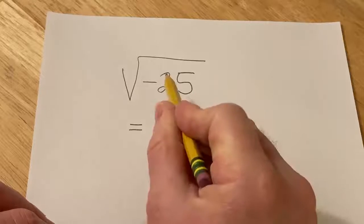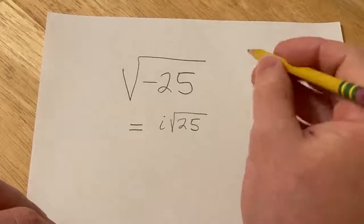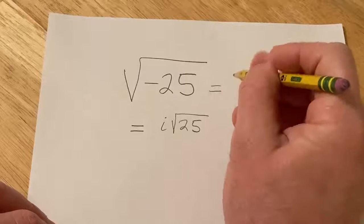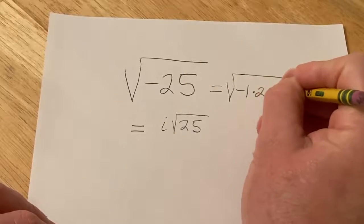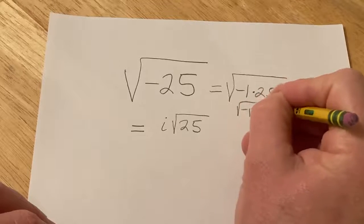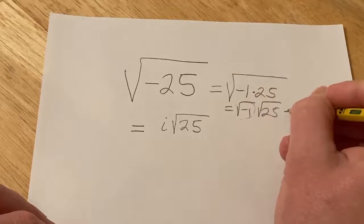So whenever you see a negative inside a square root, that's the first thing you want to do. The reason you can do that is, if you're curious, you can write this as negative 1 times 25. And then you can break it up into two square roots. And then this piece here, this is your i.